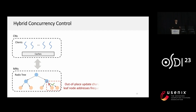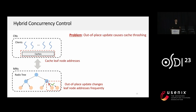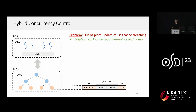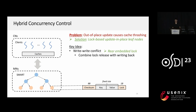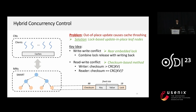For the leaf node design, the existing radix tree updates leaf nodes out of place, which frequently changes leaf node addresses. Since computing-side caches usually store leaf node addresses, this out-of-place update scheme causes a cache thrashing problem. SMART proposes a log-based leaf node design with in-place updates. We designed an embedded log to resolve write-write conflicts by placing the log at the rear of each leaf node and combining the log-release operation with the write-back of the leaf node, leveraging the in-order delivery property of RDMA. A checksum-based method is also adopted to resolve read-write conflicts: the writer calculates and updates the checksum, and the reader verifies it after reading the leaf node.